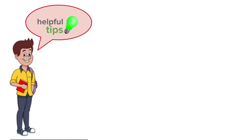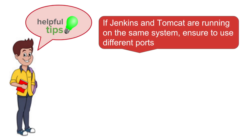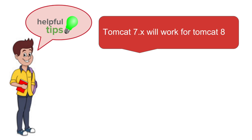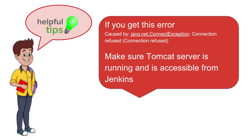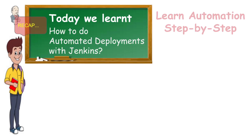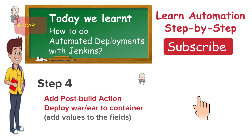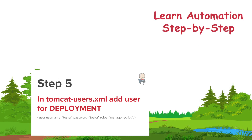Here are some useful tips: if Jenkins and Tomcat are on the same machine, make sure they use different ports — I used port 1990 for Jenkins and 8080 for Tomcat. The Tomcat 7.x container option in Jenkins configuration also works for Tomcat 8. If you get a 'connection refused' error, make sure Tomcat is running and accessible from Jenkins. I hope this session was useful — please leave feedback or questions in the comments below. Thanks for watching.